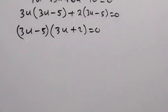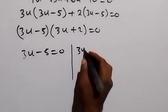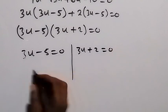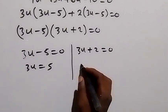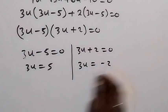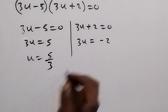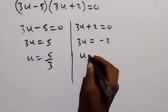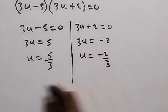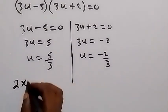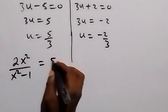So we have two cases: 3u - 5 = 0 or 3u + 2 = 0. From the first case, u = 5/3. From the second case, u = -2/3.